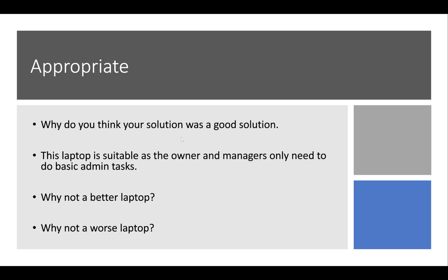For the laptop appropriateness section, ask yourself: why do you think your solution was good? The laptop is suitable because the owner and managers only need to do basic admin tasks. Why not a better laptop? Because 8 gigabytes of RAM, 256 gig SSD, Intel Core i5 is plenty — we're mostly using Word, Chrome, and online booking systems. Why not a worse laptop? You want it to last — the chosen laptop should last a good four or five years and still run smoothly for current and future planned tasks.